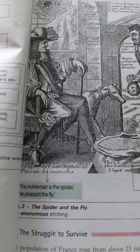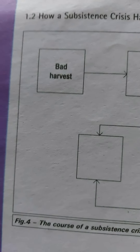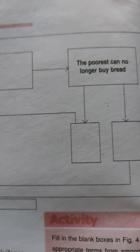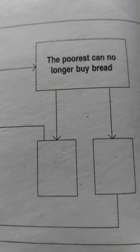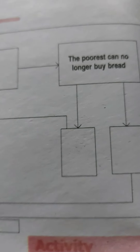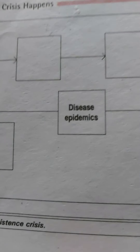Here is a figure of the spider and the fly, labeled as an anonymous etching. The diagram shows how a subsistence crisis happens: bad harvest means the poorest can no longer buy bread. When production decreases, the poorest cannot buy bread; when there is no food, disease comes, and that leads to a subsistence crisis.